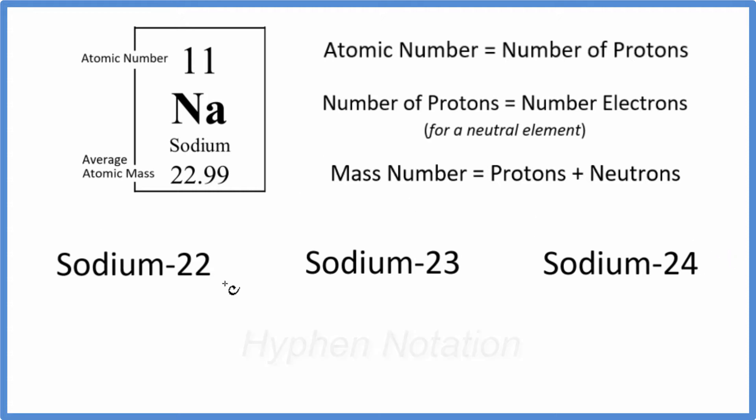First we have hyphen notation here. That's where we have the element name like sodium and a hyphen with the mass number. The mass number represents the protons plus the neutrons. So in hyphen notation we have the element symbol, then the mass number. And each one of these here is an isotope of sodium. These are the major isotopes of the sodium atom.